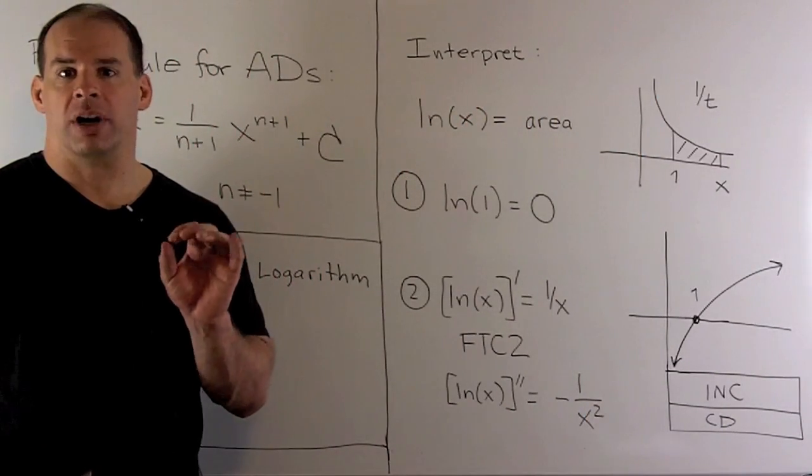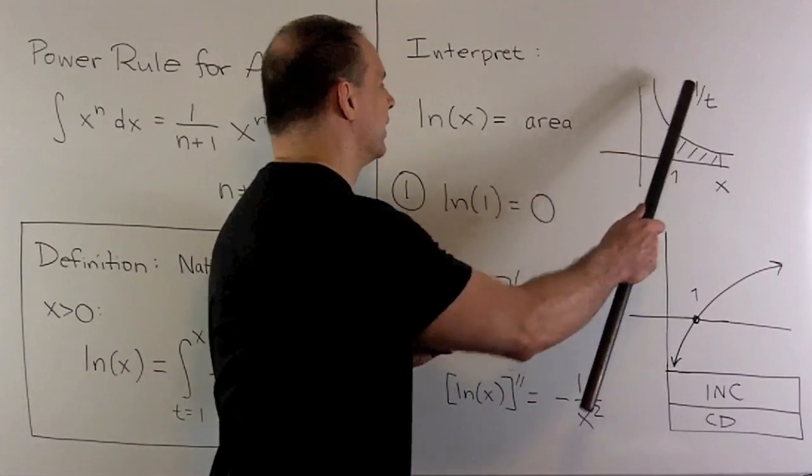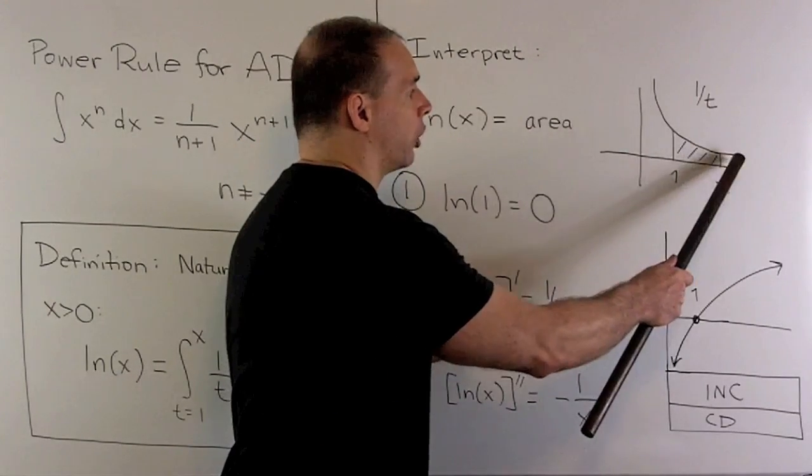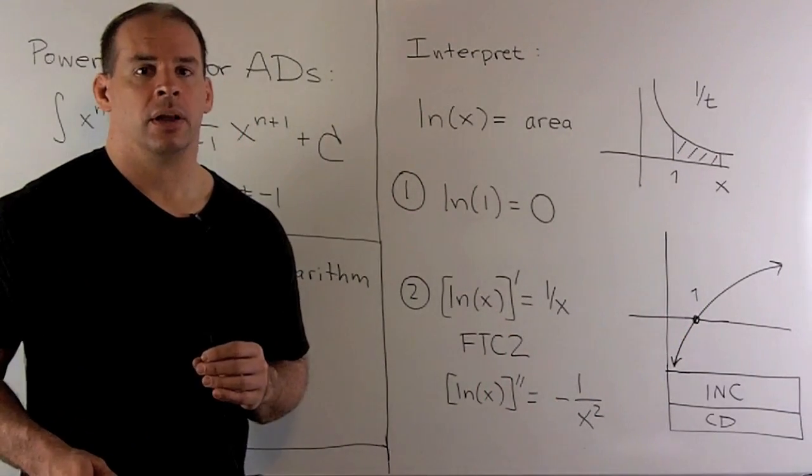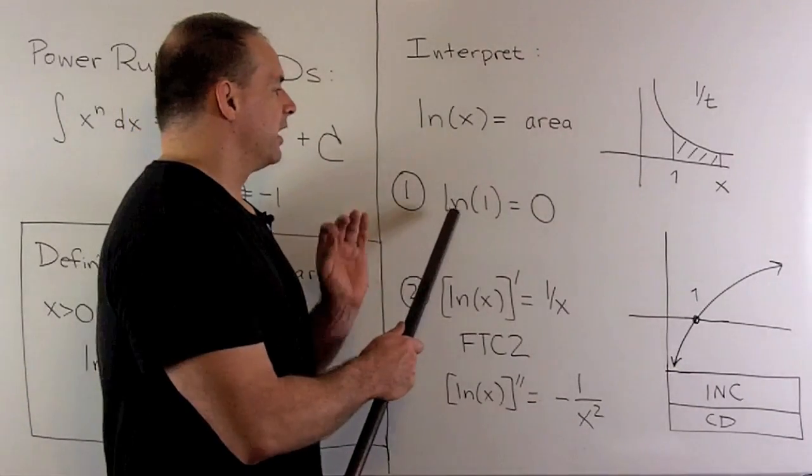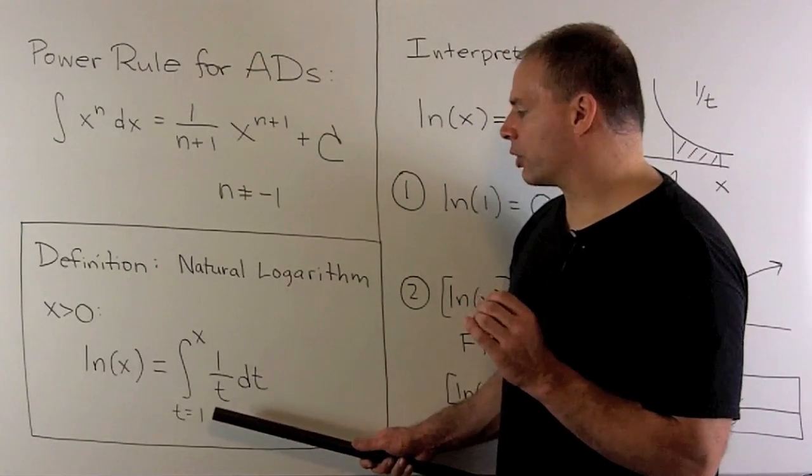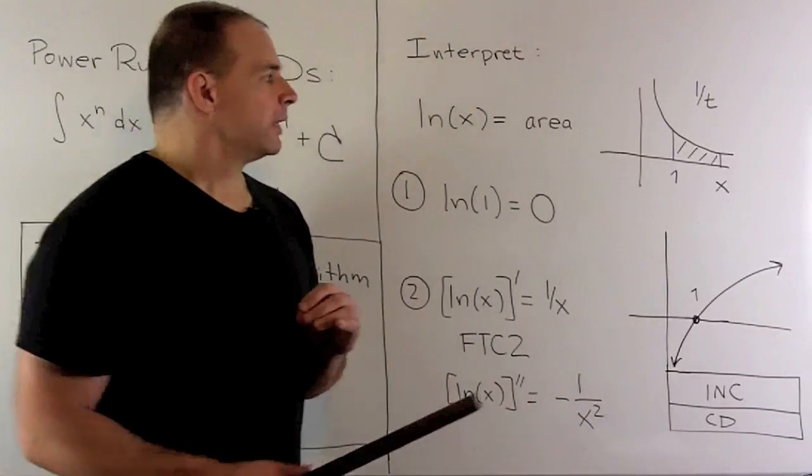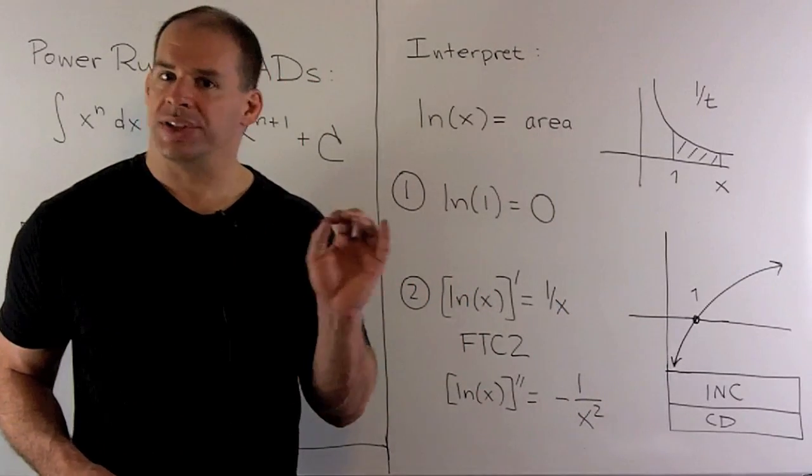So, first, how do we interpret natural log of x? Well, if we draw the graph of the function 1 over t, then natural log of x is just going to be the area between 1 and x, below our curve, and above the x-axis. So, you can think of this as being an area. Now, let's get a rough idea of what our graph looks like. So, if I take natural log of 1, if I put 1 into the definite integral here, we have a definite integral going from 1 to 1, that's always going to be equal to 0.